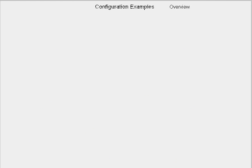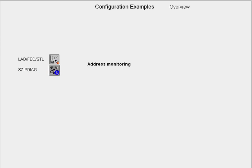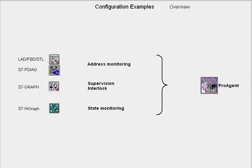In the following, we want to demonstrate a few typical configuration sequences for process diagnostics. We have chosen a brief example for each language. In ladder, function block diagram, or statement list, we will see address monitoring using S7-P-Diag add-on. In S7 graph, we will configure a supervision and an interlock for a step. And in S7 HiGraph, we will configure a monitoring time in a state. All the examples will be visualized with ProTool Pro and ProAgent.